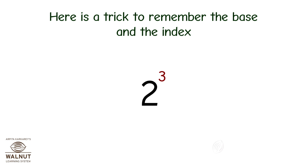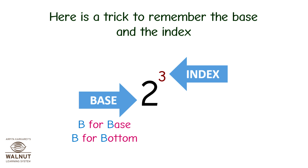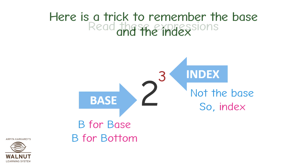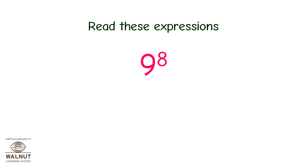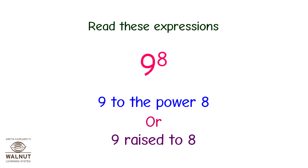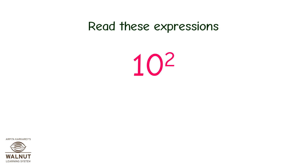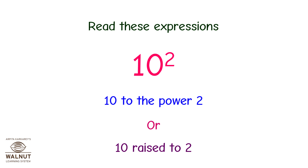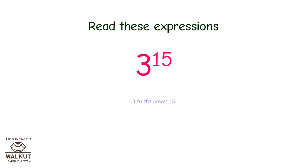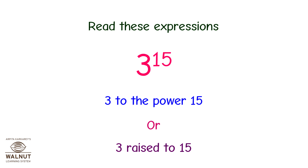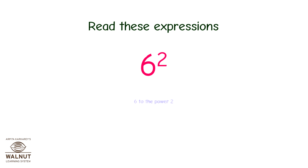Here is a trick to remember the base and the index: 2 is the base and 3 is the index. B for base, B for bottom — the base is at the bottom, the index is at the top. Now read these expressions: 9 to the power 8, or 9 raised to 8. 10 to the power 2, or 10 raised to 2. 3 to the power 15, or 3 raised to 15. 6 to the power 2, or 6 raised to 2.